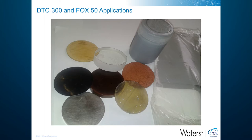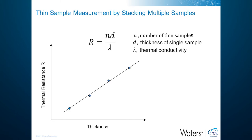The DTC-300 and FOX-50 have been used to measure many materials, such as polymers, rubber, brick, glass, wood, paste, and thin plastic sheets. Regarding measurement of thin samples with thermal resistances outside the measurement range, multi-layer analysis can be used by stacking several layers of thin samples for multiple runs. The thermal conductivity is the reciprocal of the slope of the fitted linear relation of thermal resistance versus thickness. When needed, a reference sample can be inserted below the stack to bring the total resistance within the instrument's calibration range.